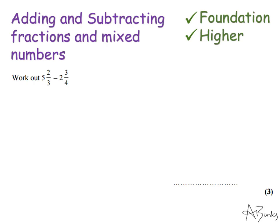So the easiest way to do it is change them both to improper fractions. So I'm going to do this to the side. So 5 and 2 thirds. To get that as an improper fraction, I do 5 times 3, add 2 to get my numerator, and that's all going to be over 3, leave my denominator as it is. So that's 5 times 3 is 15, add 2 is 17 over 3. So 5 and 2 thirds is the same as 17 thirds.